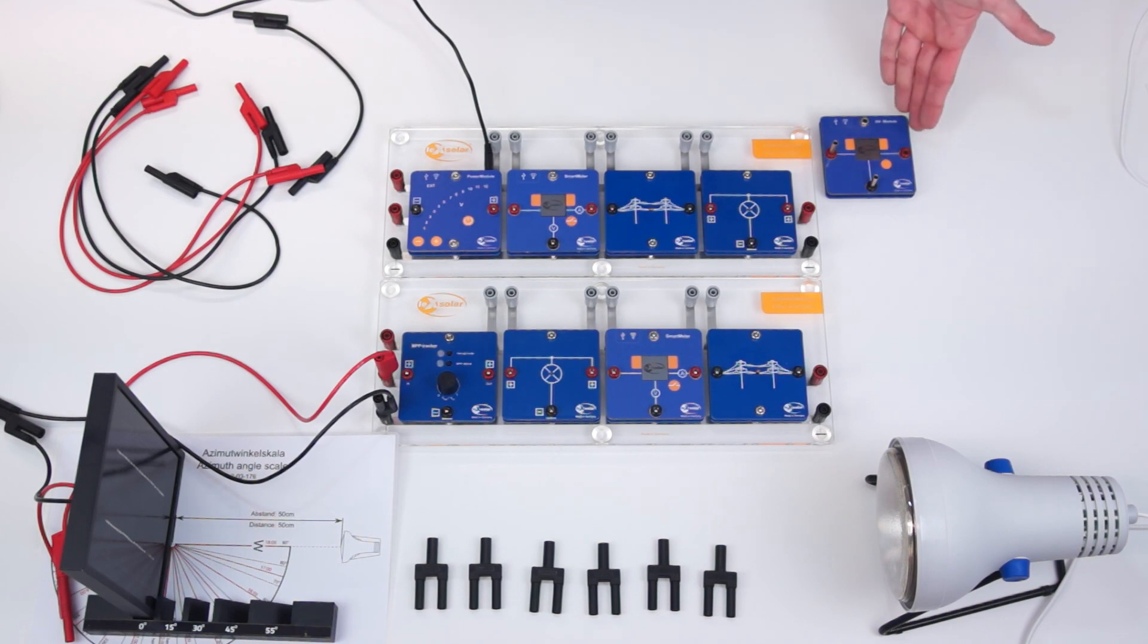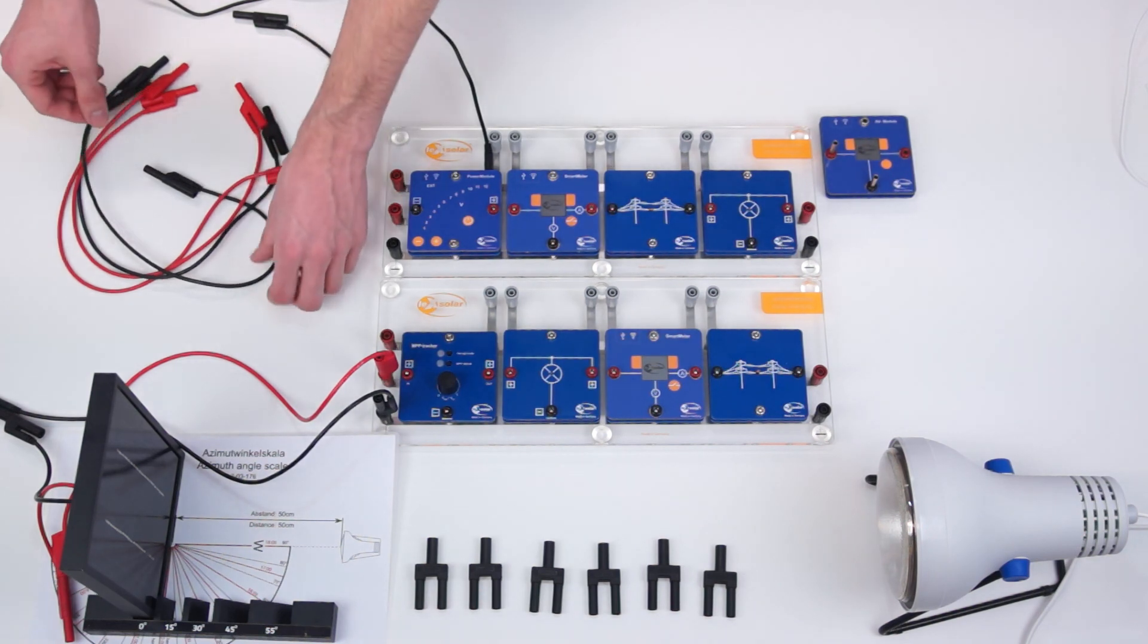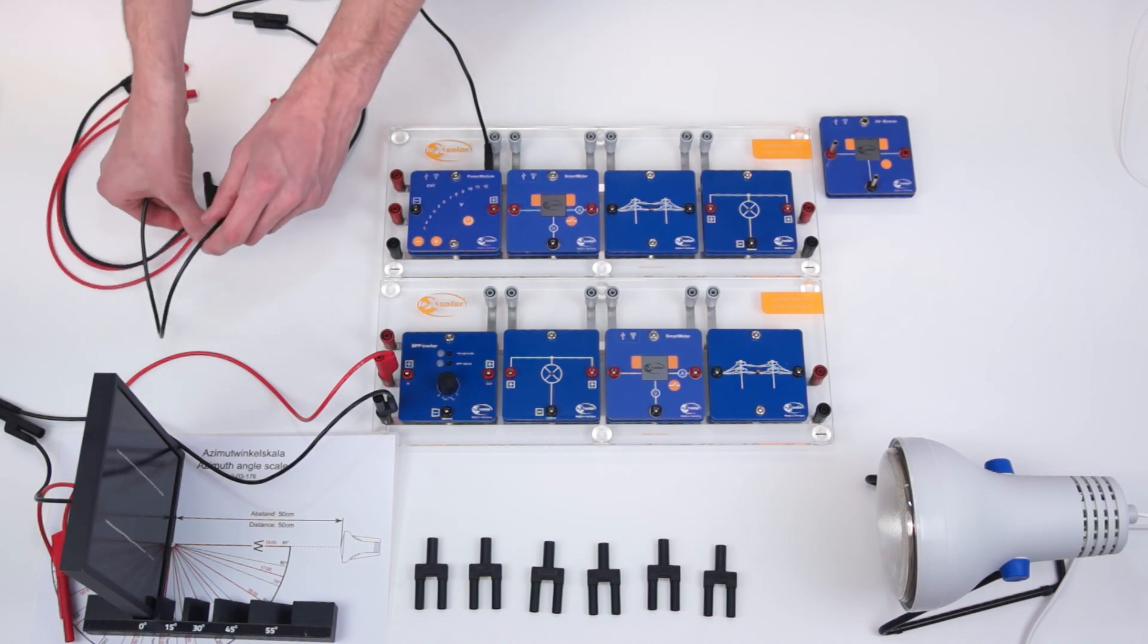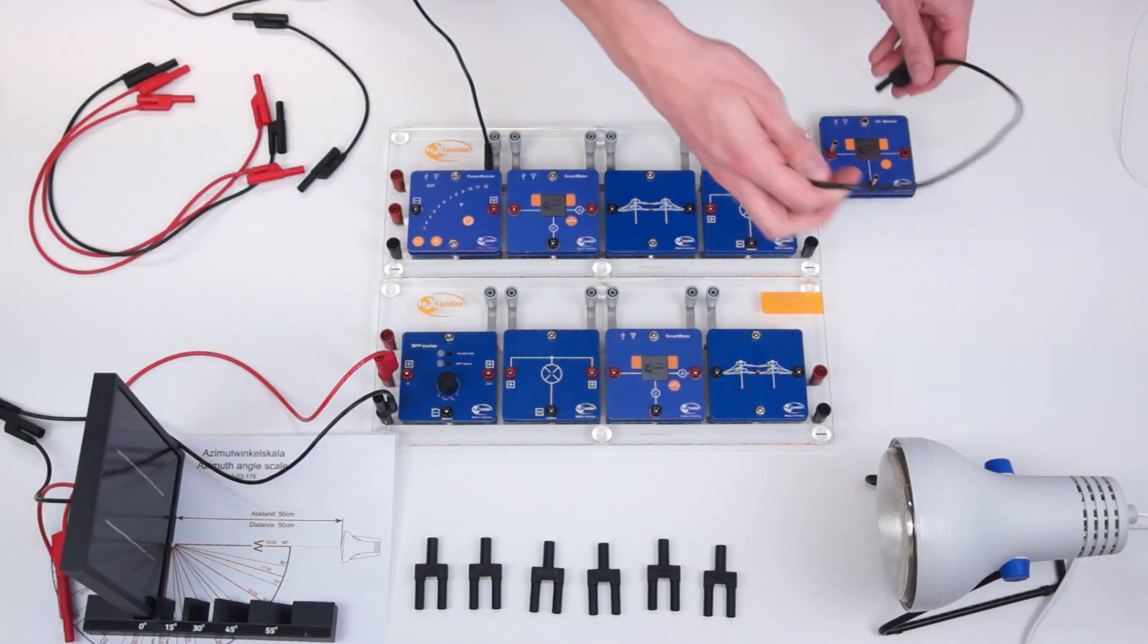To measure the voltage at both households, we use the AV module. Due to the cables, we can connect it at any point in the circuit.